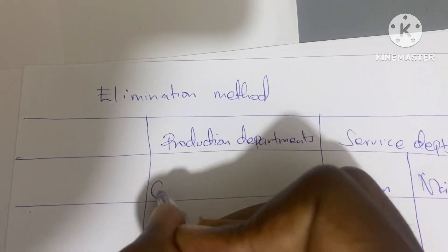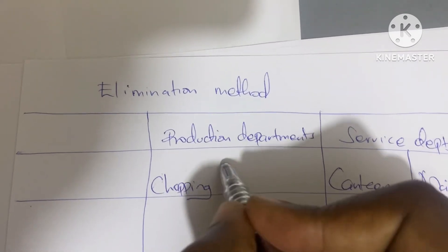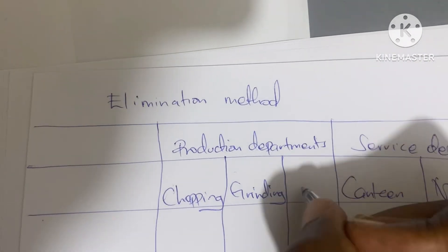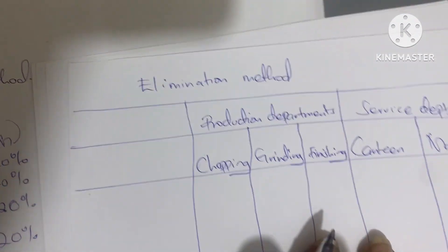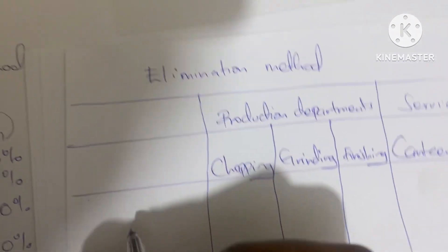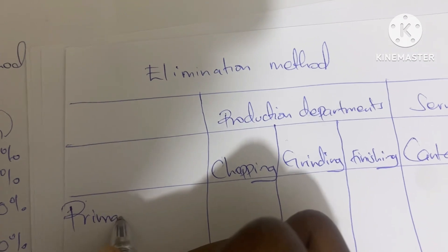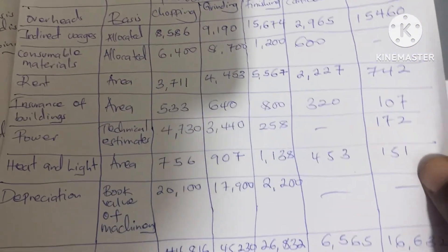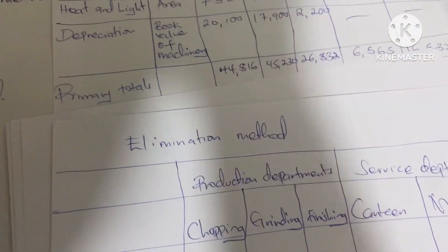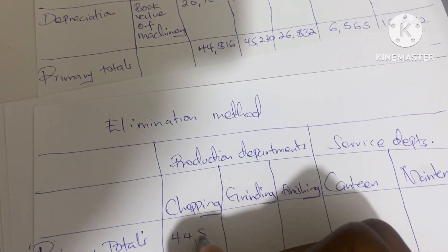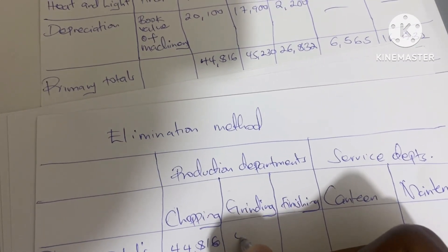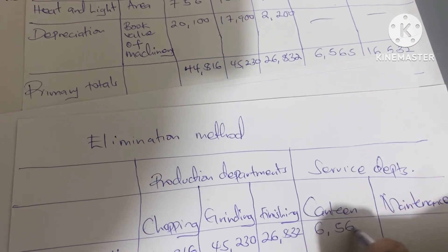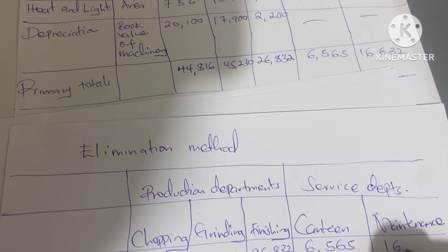The production departments are chopping, grinding, and finishing. The first thing we write is the primary totals. We copy and paste the primary totals here: 44816, 45230, 26832, 65650, 16632.